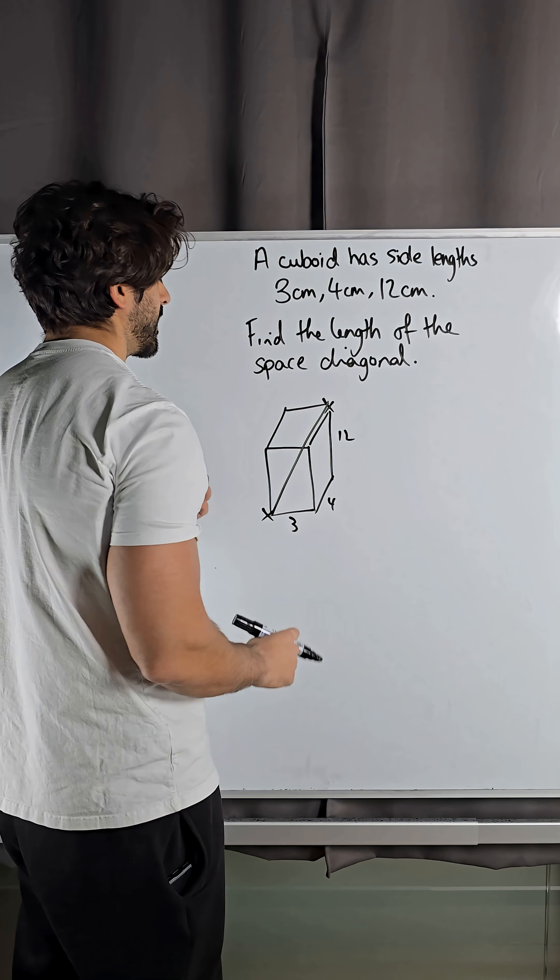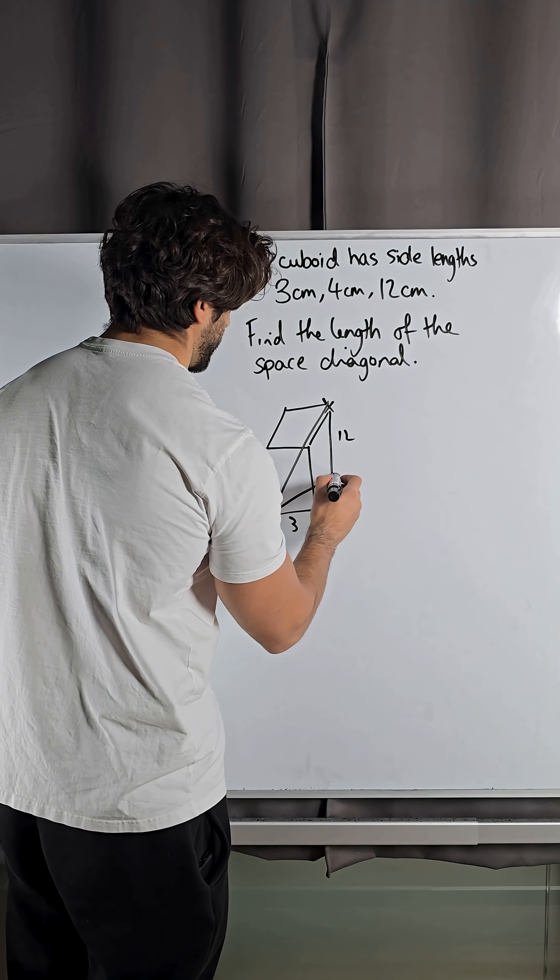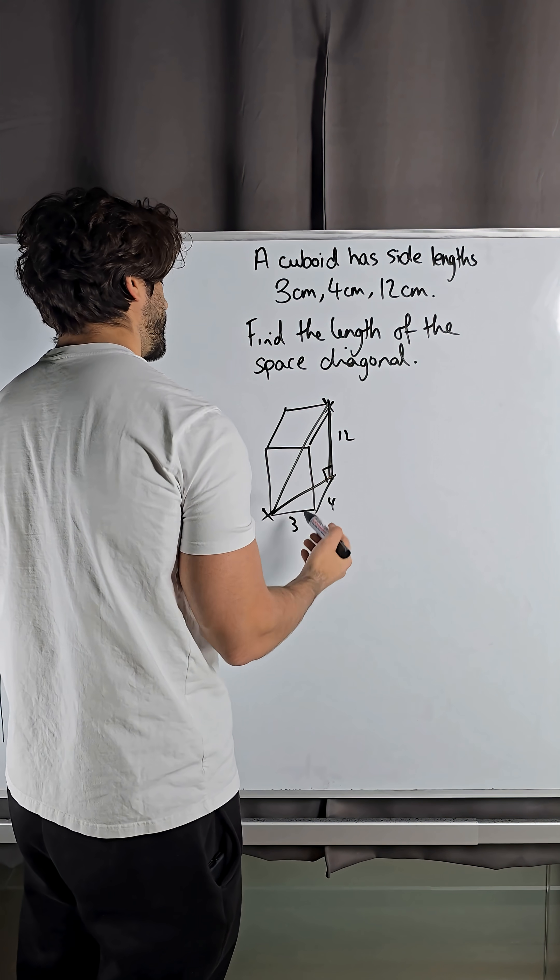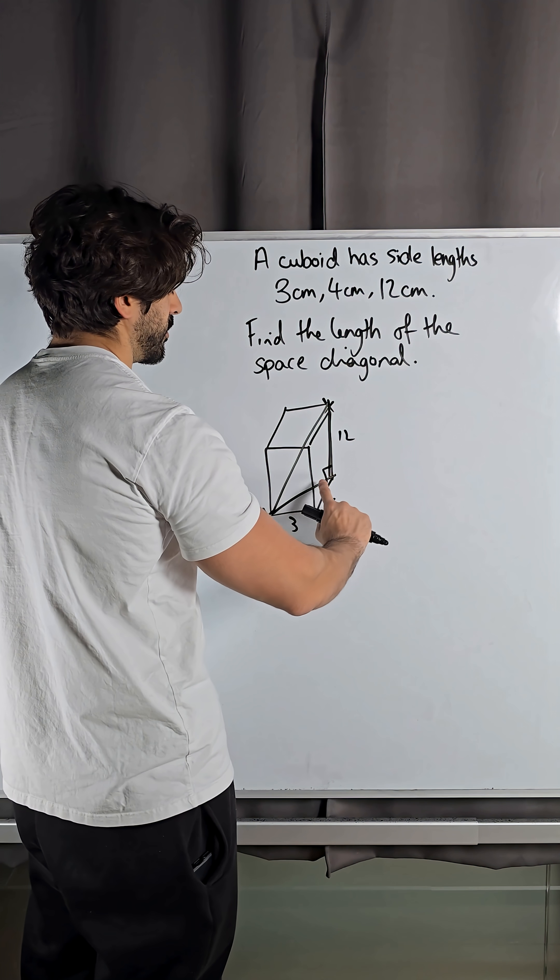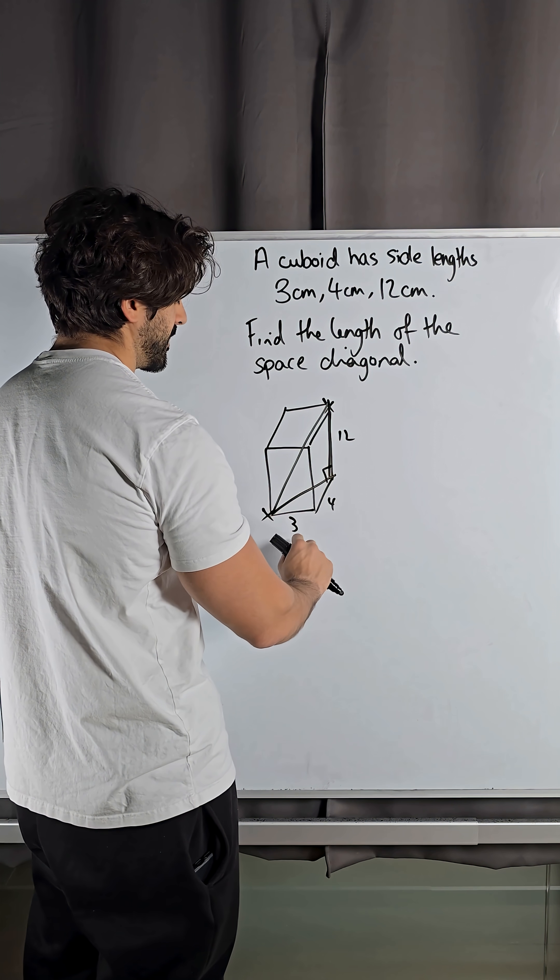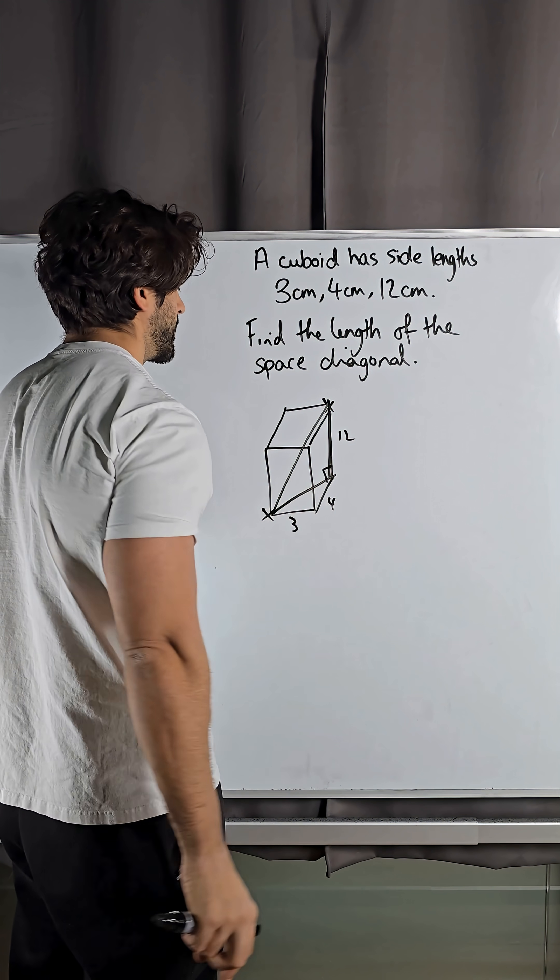Now corner to corner like that is still Pythagoras's theorem because you can form this right angle triangle like this and do Pythagoras's theorem on this right angle triangle. Now we know that height is 12, this base length here would be doing Pythagoras to 3 and 4 because on the base there you have the 3 and 4 in that square.